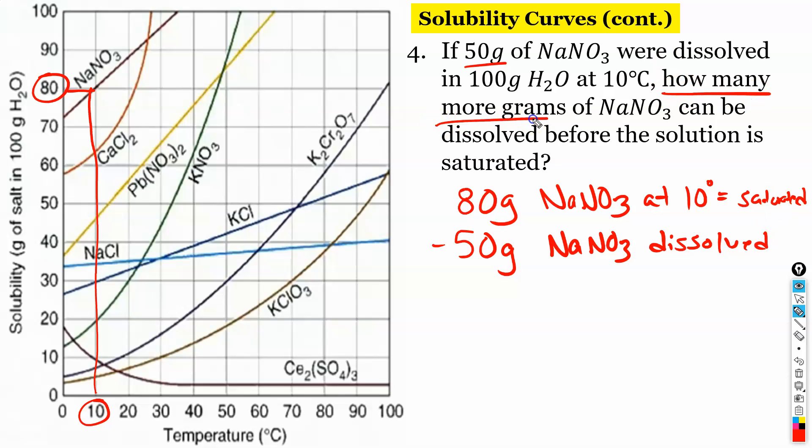And it says how many more grams can we put in? So if we've got 50 in there right now, it will hold a total of 80. We just subtract to get 30 grams more. That's it.